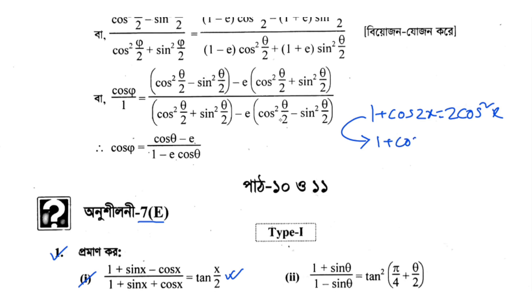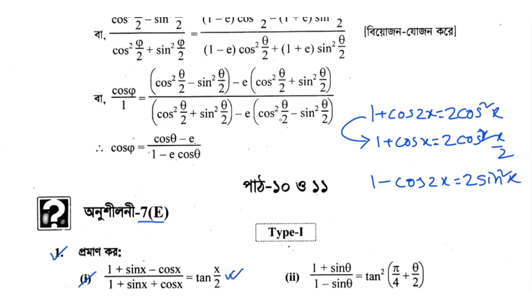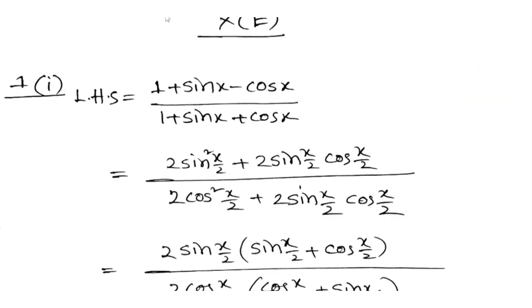So 1 plus cos x — the formula is 2 cos squared (x/2). And for 1 minus cos 2x, the formula is 2 sin squared x. So from 1 minus cos x, we get 2 sin squared (x/2). These are the half-angle formulas we will use.